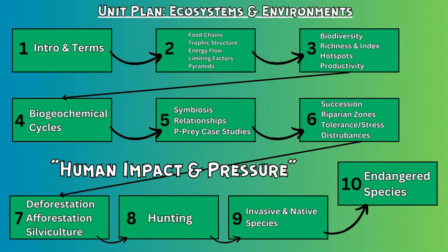Then we go into the biogeochemical cycles, looking at the water cycle, carbon, sulfur, phosphorus, and nitrogen cycle, and looking at how all of these interact and interlink to create the complex ecosystems, biomes, and environments we see through various biodiversity hotspots and food webs and food chains. So again, linking everything together from previous lessons and building for future lessons.